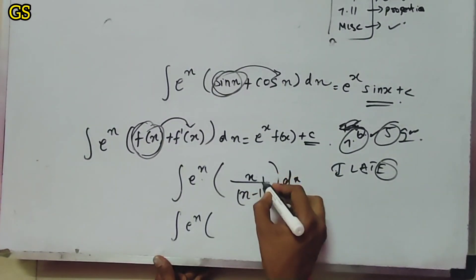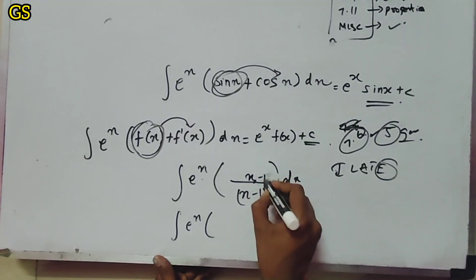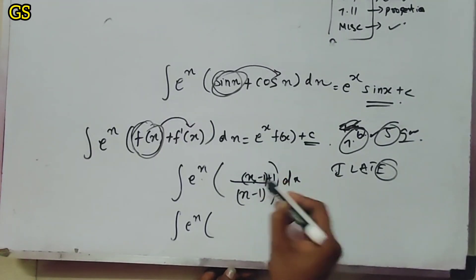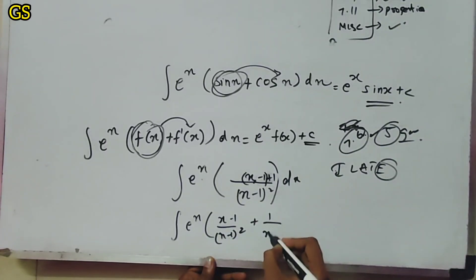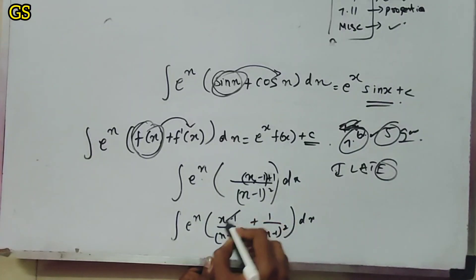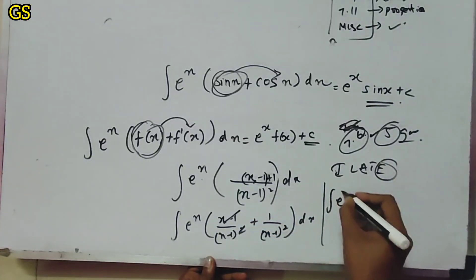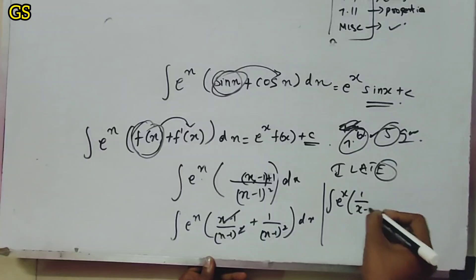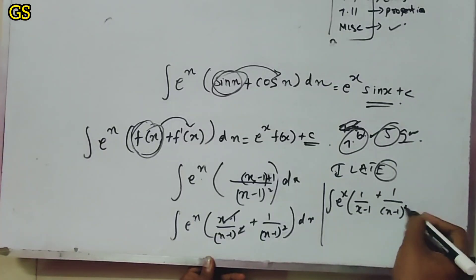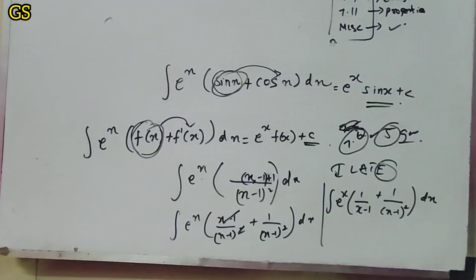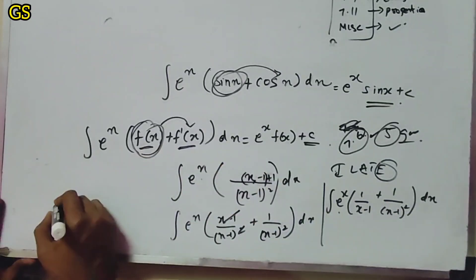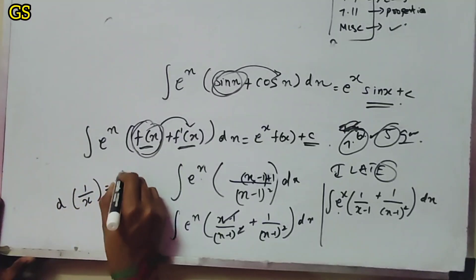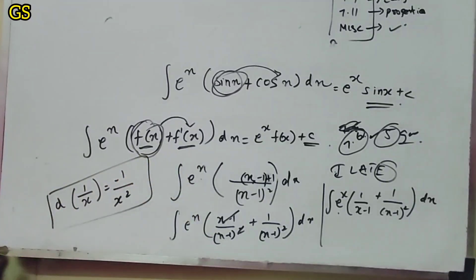Applying the formula with x minus 1 whole square: x is zero, then minus 1 plus 1. The expression becomes 1 over (x minus 1) plus 1 over (x minus 1) whole squared, times dx. This is e^x power, so integration of e^x times [1 over (x minus 1) plus 1 over (x minus 1) squared] dx. Differentiation of 1 over x gives minus 1 over x squared.